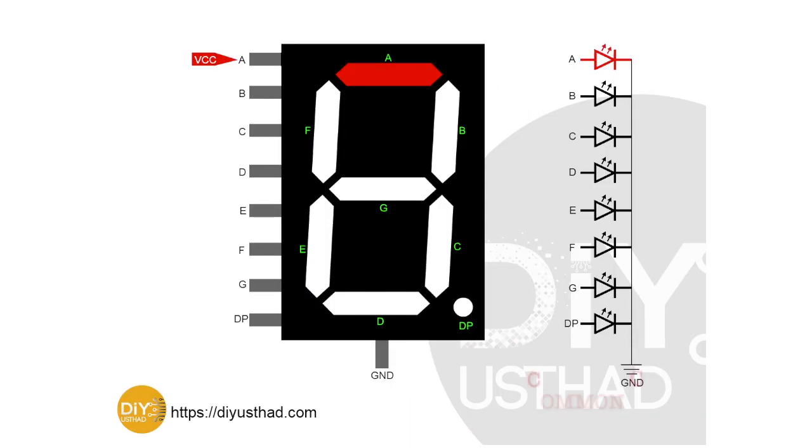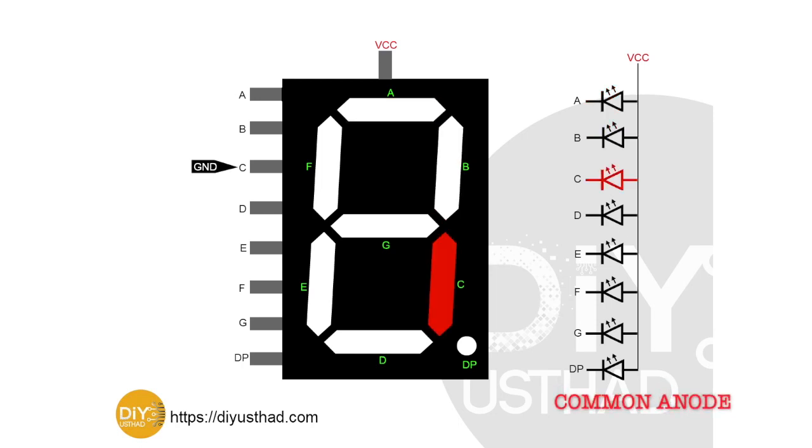This is a simple illustration to show how a common cathode seven segment display works. The common pin is connected to ground, and when power is supplied to any segment, that segment lights up. For common anode, the common pin connects to VCC, and if a pin is connected to ground, that particular segment will light up.